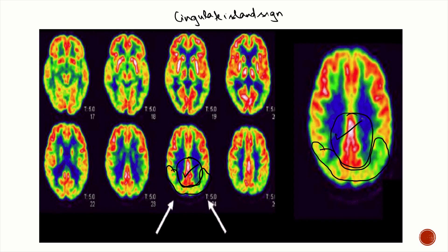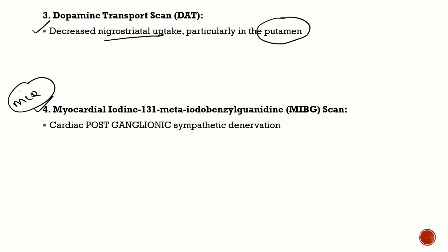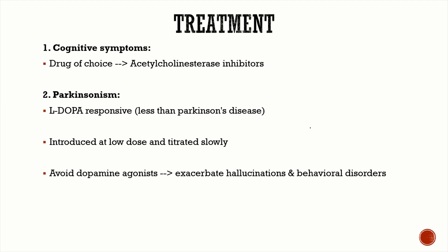On dopamine transport scan (DaT scan), you will see decreased nigrostriatal uptake, especially in the putamen. Very importantly for exams: on myocardial iodine-131 MIBG scan, you will see cardiac postganglionic sympathetic denervation — a very important MCQ.